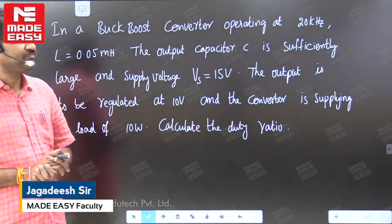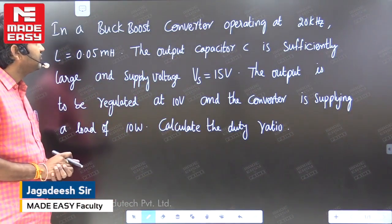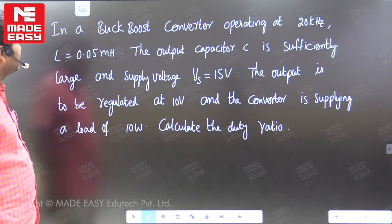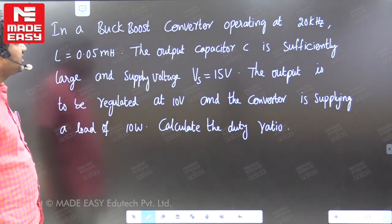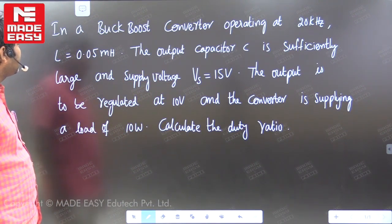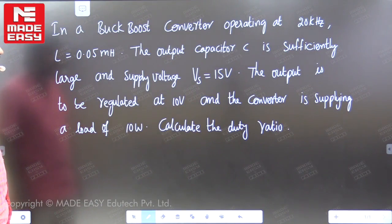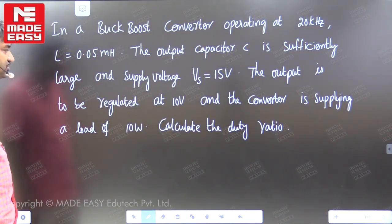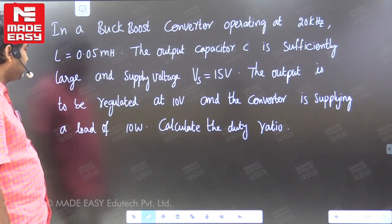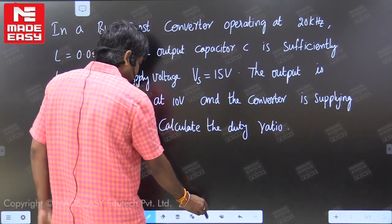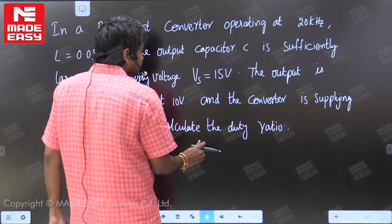Hello students, good morning. Now we are going to discuss a question on the buck-boost converter. In a buck-boost converter operating at 20 kilohertz, L is equal to 0.05 millihenry, the output capacitance is sufficiently large, the supply voltage is 15 volts, output voltage is to be regulated at 10 volts, and the converter is supplying a load of 10 watts. Calculate the duty ratio.